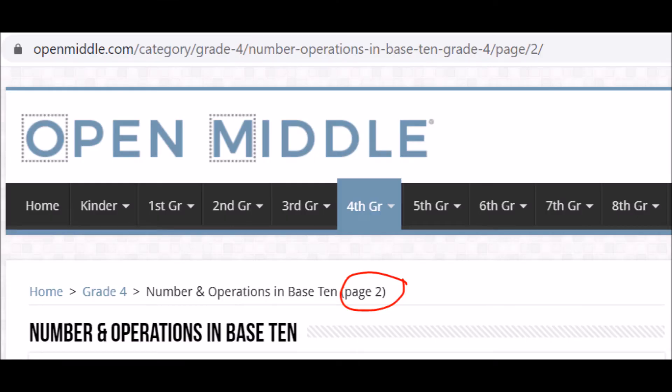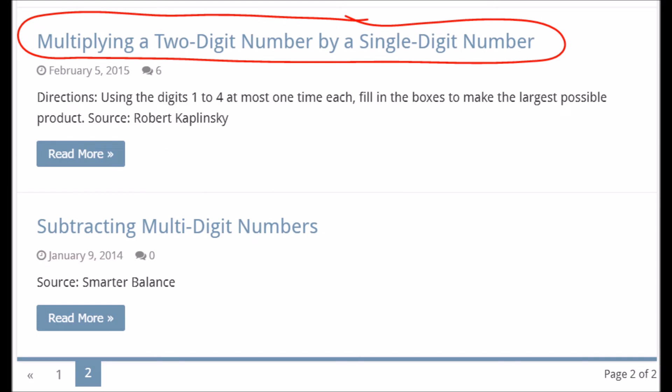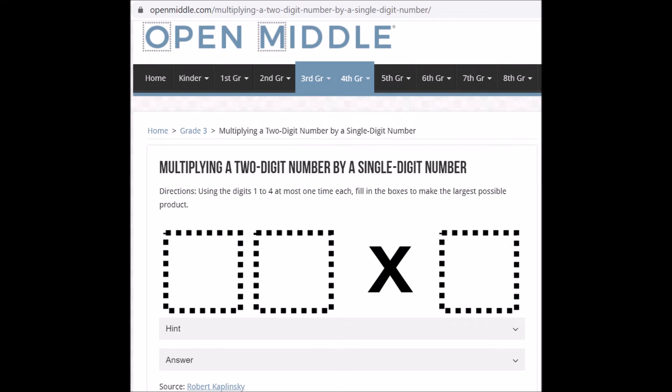Okay. So now we're going to do the fourth grade problem. So if you go to grade four in the tab and you go to the number and operations in base 10 tab. And we're actually going to go to the second page. That's because one of these activities I've already done with fourth grade and really liked it. So I dug down to the second page to find it. It's the one that's the second from the bottom. It's called multiplying a two digit number by a single digit number. And this source is Robert Kaplinsky, who's one of the founders of Open Middle.